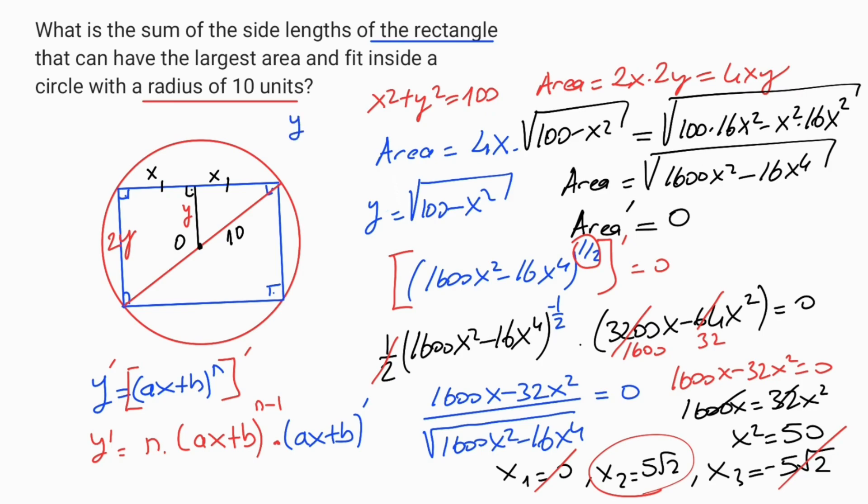If you use first equation, y must be equal 5 root 2. And notice that the side length of the rectangle is asked. So 2x must be equal 10 root 2 and 2y must be equal 10 root 2.